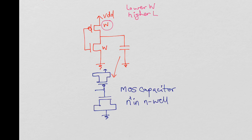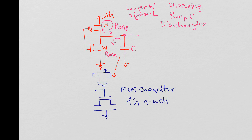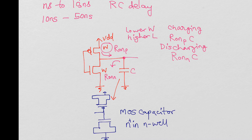What happens is there is an ON resistance: R_ON_P and R_ON_N. When this node is getting charged up toward VDD, R_ON_P comes into picture. When it is discharging, R_ON_N comes into picture. So the charging time constant is R_ON_P multiplied by capacitance C, and the discharging time constant is R_ON_N multiplied by C. That's how you get a delay from input to output.